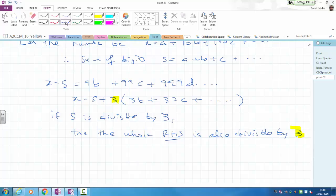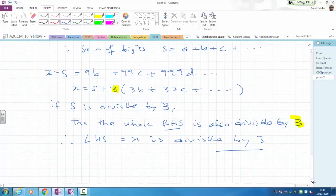Then the whole right hand side is also going to be divisible by 3. Because we have this factor of 3 which we've just factorized out. And so therefore, if I'm adding two factors of 3 together, then my left hand side, x is divisible by 3.